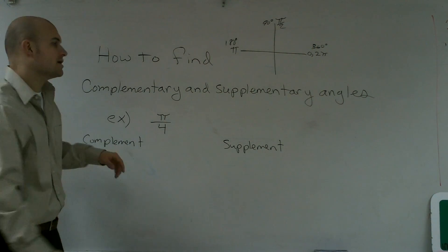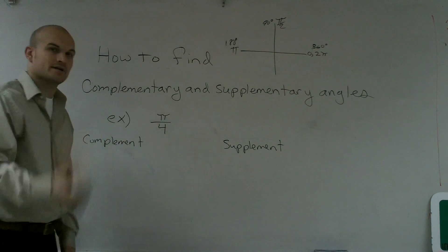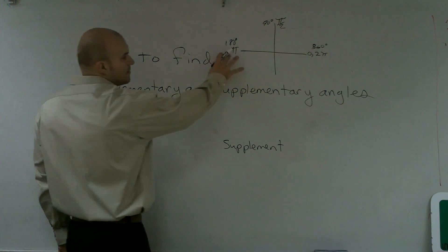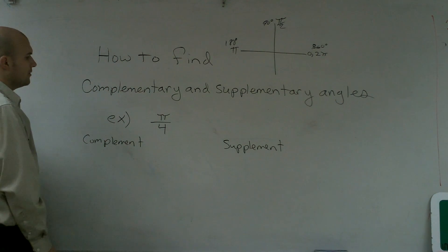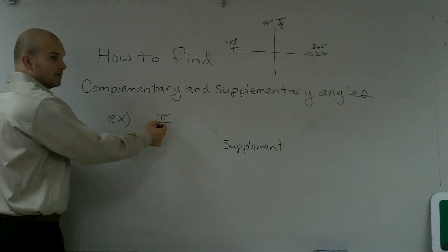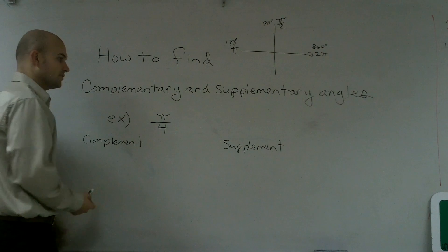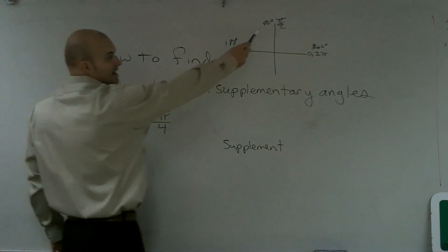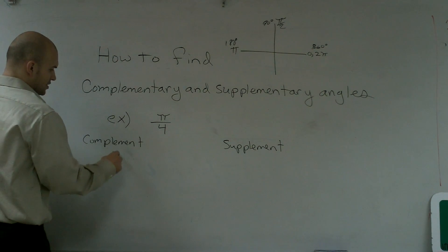So, supplementary angles are two angles that add to 180 degrees, or π, as we're now learning. So, if I were to find the complement, I'm going to first write an equation. I know that this angle plus its complement has to equal 90 degrees, which we're now using π over 2 since this is in radians.